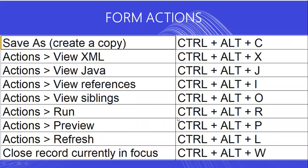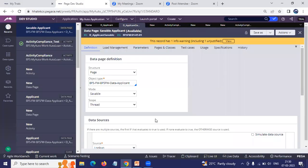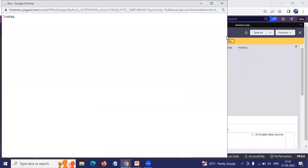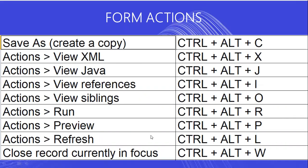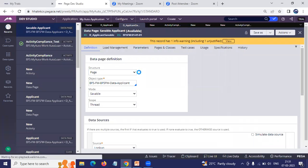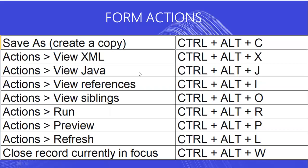To run this data page, use Ctrl+Alt+R. You should note that while Windows generally supports Ctrl plus a key, Pega adds Alt alongside Control — so it's Ctrl+Alt plus the respective character for each Pega function. To preview or refresh, use Ctrl+Alt+P and Ctrl+Alt+L respectively. To close the record currently in focus, use Ctrl+Alt+W — pressing it closes the data page. These are all the form actions.